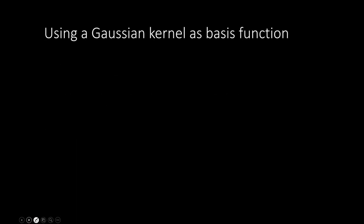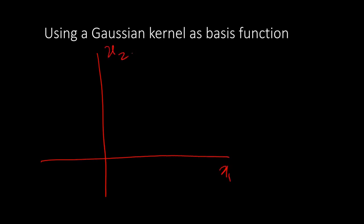First, let's motivate the idea of a kernel. Linear classification is not always adequate to separate two different classes. For example, let's say we have two features, x1 and x2, where the positive class is concentrated in the middle and the negative classes are on the two sides. There is no linear boundary that can separate these two classes.